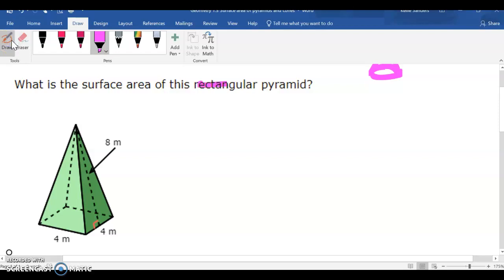The reason that it tells us it's a rectangular pyramid is it tells us what the shape of the base is. So, to be able to find the surface area of this,